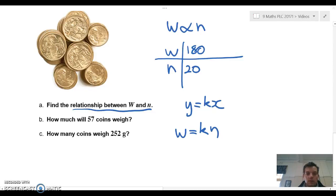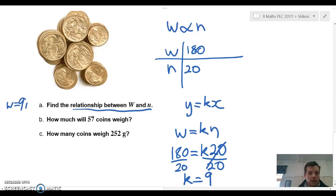We know that w is 180, and our n-value is 20. So again, we divide by 20. So we'll get our k-value equal to 9. So if we have a relationship, a rule, we're going to have w equals 9n.